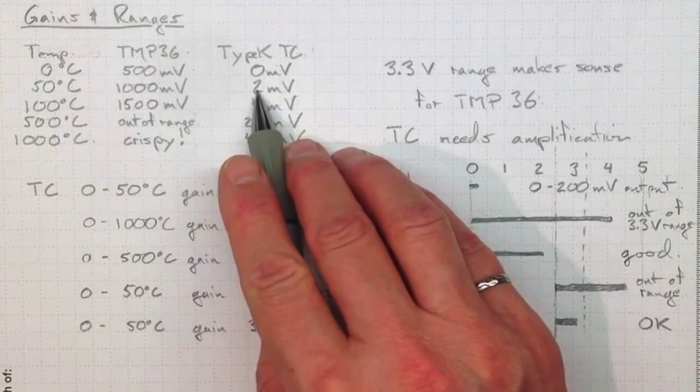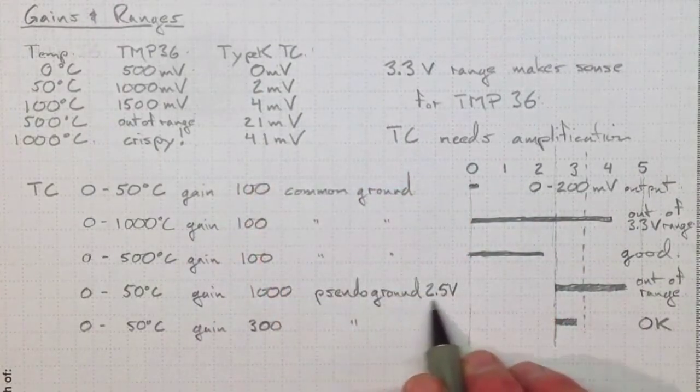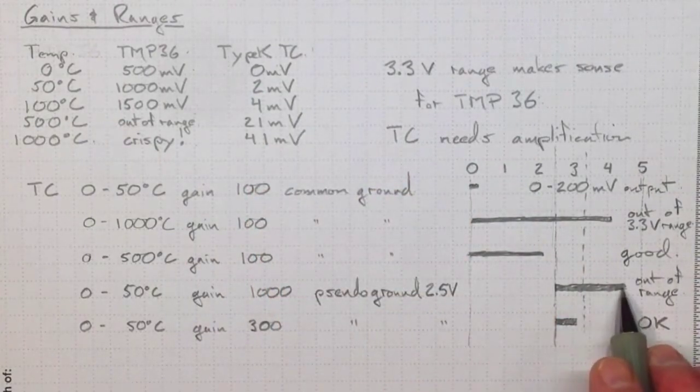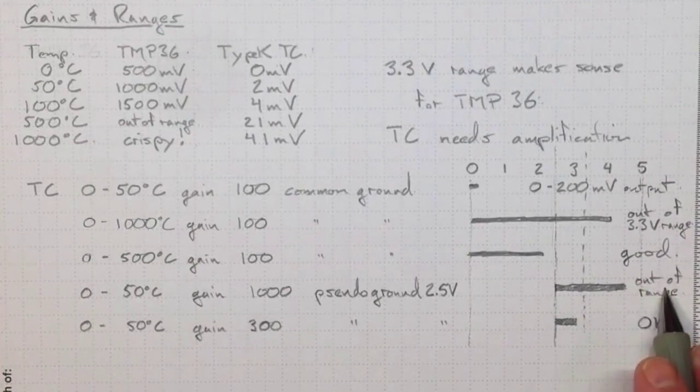If we use that 2.5 pseudo ground and a gain of a thousand, then we'd have two millivolts times a thousand is two volts, two thousand millivolts, plus our pseudo ground of 2.5. We'd be up here and again we're out of range, so that wouldn't work for us.